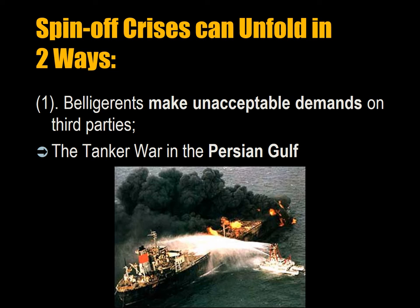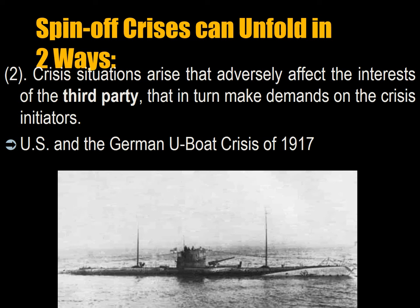Spin-off crises unfold in two ways. First, belligerents make unacceptable demands on third parties. The Iraqis, for example, were sinking oil tankers in the Persian Gulf during the Iran-Iraq war in order to provoke a naval intervention by the international community against Iran. It worked: the US, UK, France, and the Soviet Union, as well as other European states, deployed a Navy that was then used against the Iranian Navy, ultimately leading to attacks on the Iranian Navy by the US Navy. Second, crisis situations arise that adversely affect the interests of a third party, which in turn makes demands on the crisis initiators — as with the US and the German U-boat deployment of 1917. In all cases, the decision makers were willing to go to war to protect their interests.